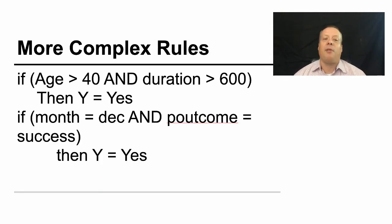And you could have more complex rules. If the age is greater than 40 and duration is greater than 600, then yes, they will respond. And if the month is equal to December and the previous outcome was a success, then yes, they will respond positively. And this could help you decide who to target with this particular offer.